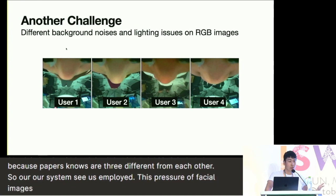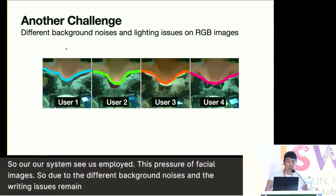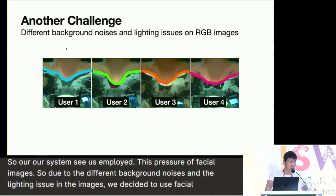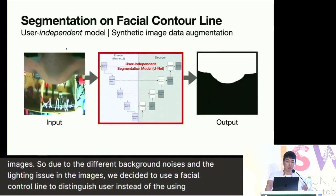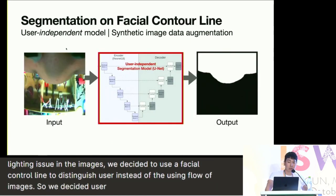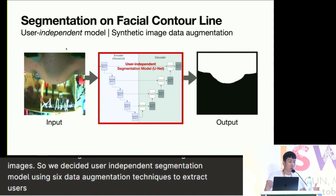Due to different background noise and lighting issues with RGB images, we decided to use a facial contour line to distinguish between users instead of using full-color RGB images. We also developed a user-independent segmentation model using synthetic data augmentation techniques to extract the user's facial part from the noisy background.